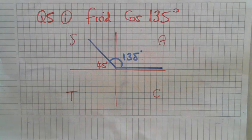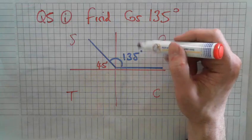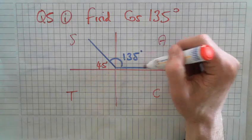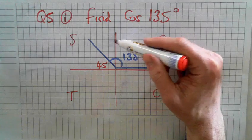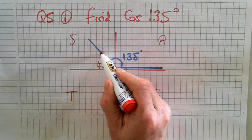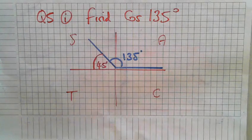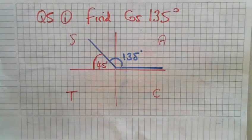We've defined the cos of 135, and I've drawn the angle of 135. What's the remaining angle? The remaining angle is 45.